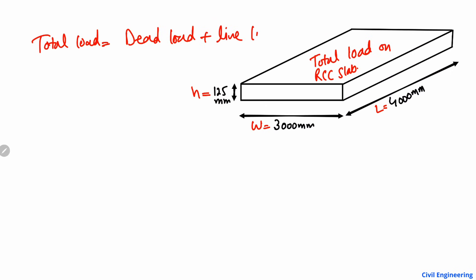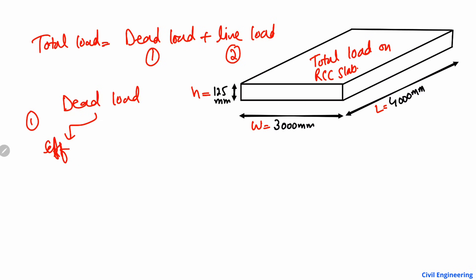First we are going to find out the dead load, and then we can find out the live load. The dead load is again divided into two parts: the self-weight of the slab, plus the floor finish load.